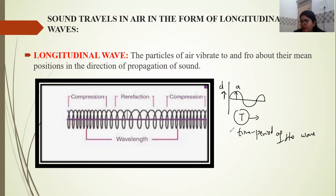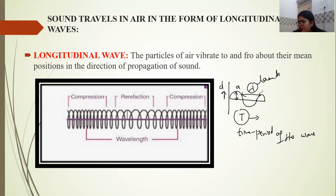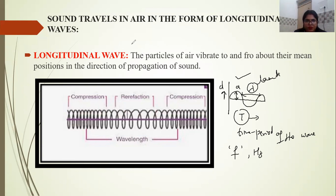Important terms related to waves: Amplitude is the maximum displacement of a wave on either side from its mean to extreme position. Wavelength is the length of a wave corresponding to one vibration, represented by lambda. Frequency is the number of vibrations produced by a source in one second, represented by F, and its SI unit is Hertz (Hz).